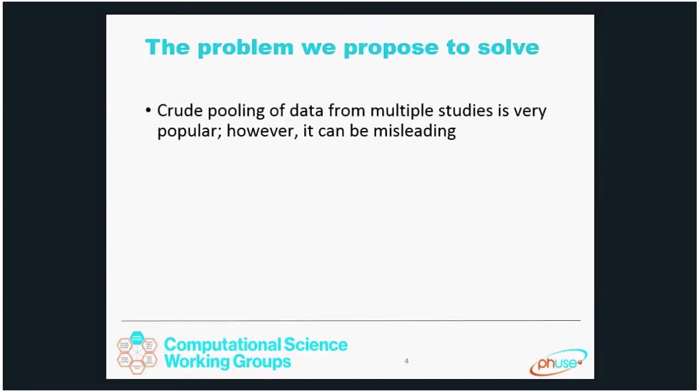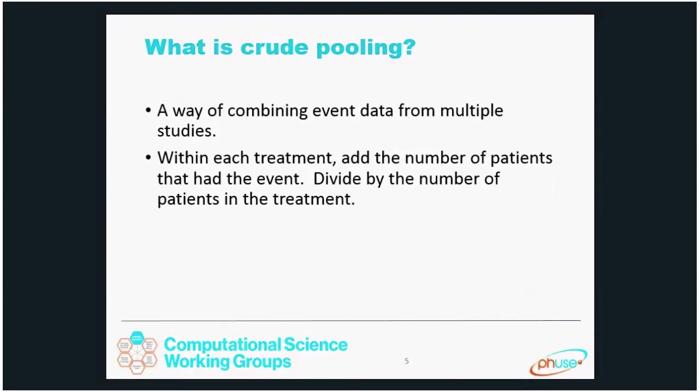The problem is that crude pooling of data from multiple studies can be misleading. Let me show you how. First of all, I need to define crude pooling. It's a way of combining event data from multiple studies — it could be lab data or all kinds of things — but within each treatment you add the number of patients that had the event and divide by the number of patients in the treatment. Pretty simple.